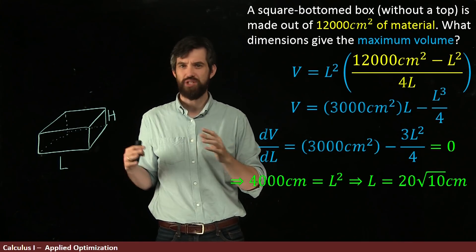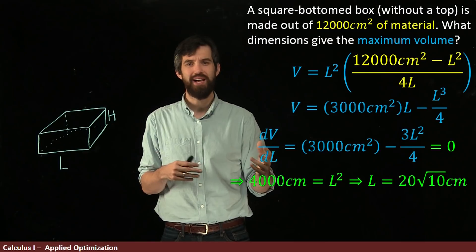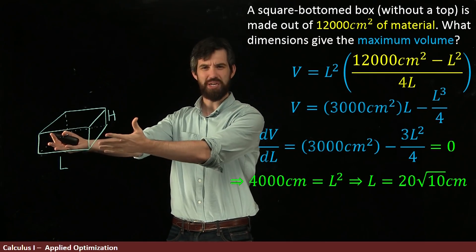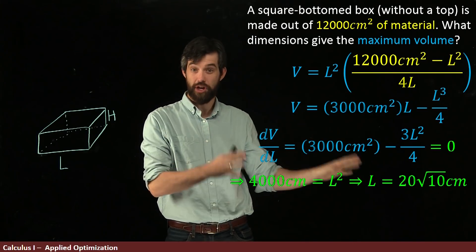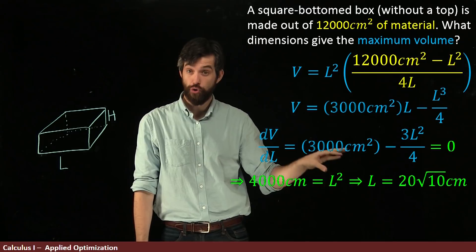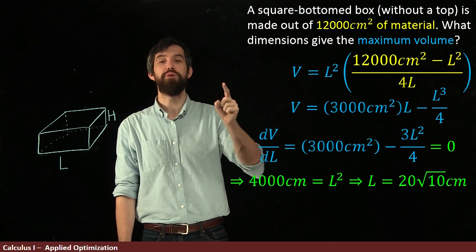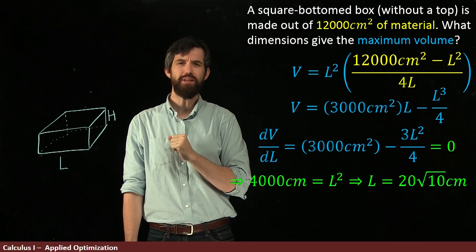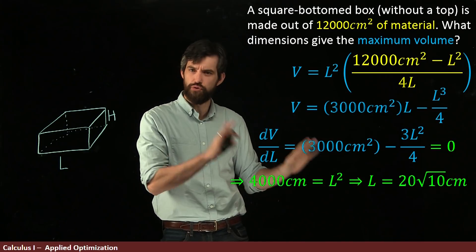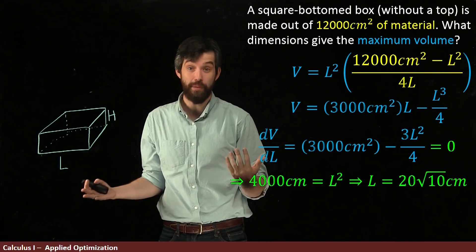By the way, because of the square, technically it's plus or minus 20 root 10 centimeters. But let's think about this physically. A length of a negative number to construct a block doesn't make any sense. So I'm just going to take just the positive root. So this is my critical number. And this is the value of L where I am going to have a maximum, or at least, am I completely confident about that? I mean, it's for sure a critical number. Its derivative is zero. But does it give a maximum? It might give a minimum.